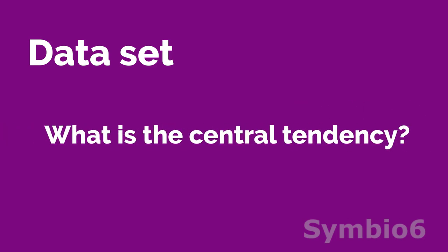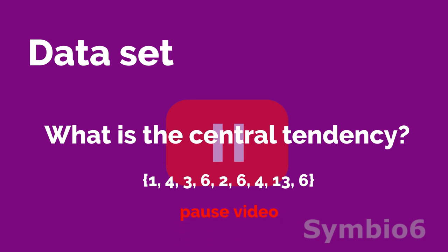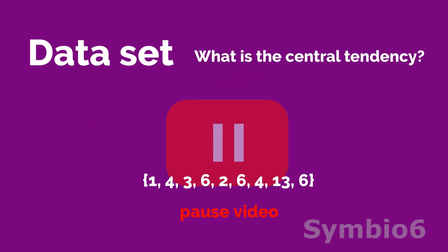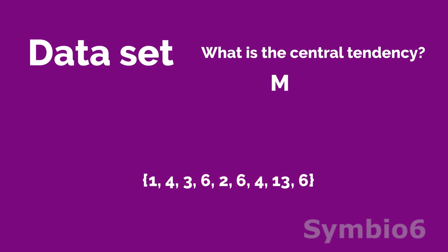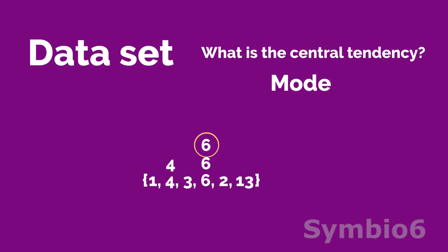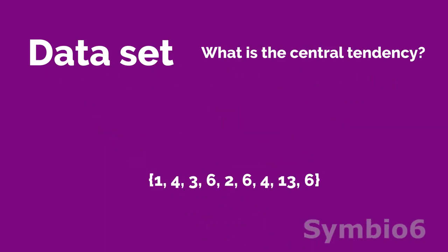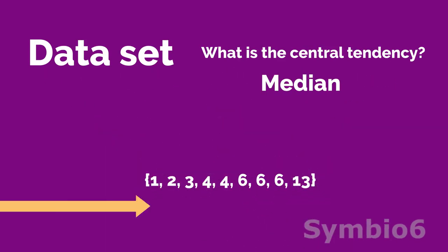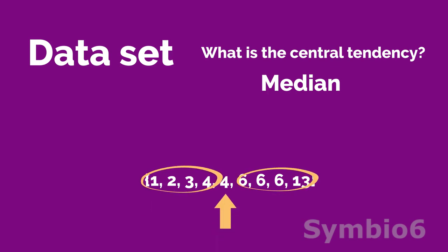What is the central tendency of a data set with these values? Median is the middle value in an ordered data set. In this example, the median is 4, and it splits the set into two equal groups.